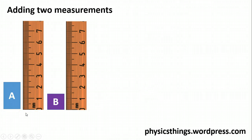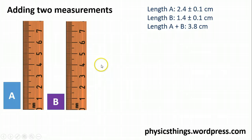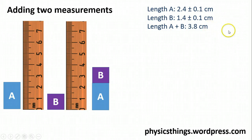If I measure length A to be about 2.4 cm and length B to be about 1.4 cm — using a ruler with a precision of 0.1 cm (1 mm) — then by combining the two together I will get an overall length of 3.8 cm. But what is that combined error going to be? What is my absolute uncertainty for my length going to be?